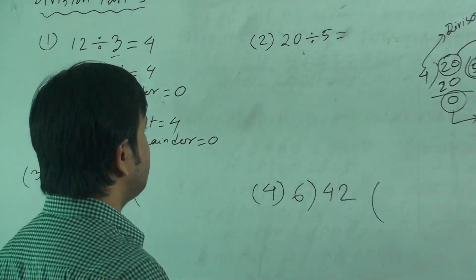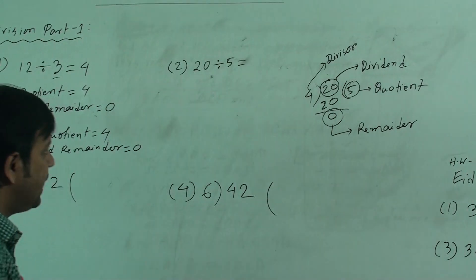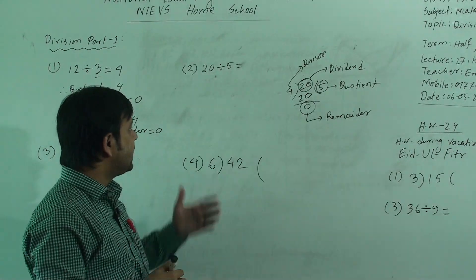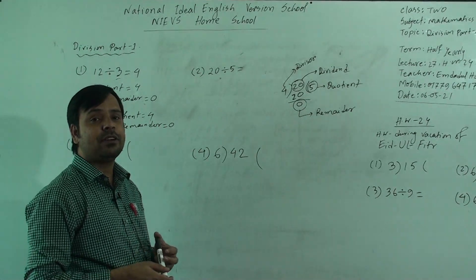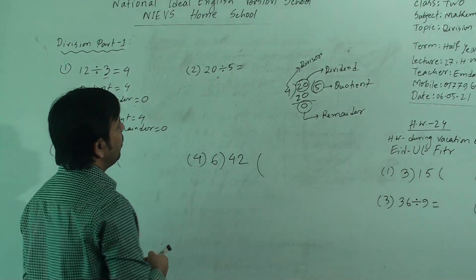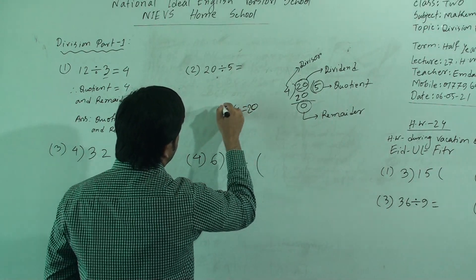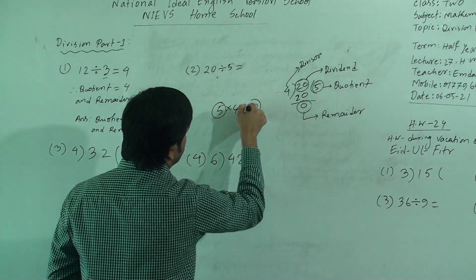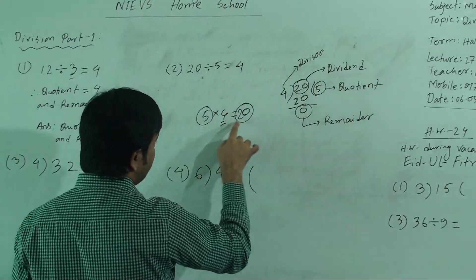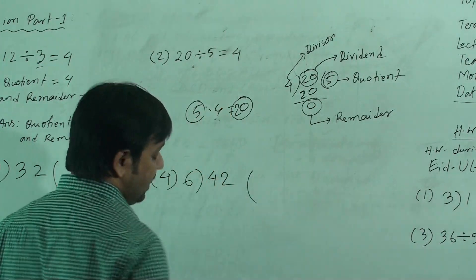Now let us see the next question. Next question is 20 divided by 5. We need to divide 20 by 5. So, 5 is the divisor. We have to say the times table of 5: 5 0s are 0, 5 1s are 5, 5 2s are 10, 5 3s are 15, 5 4s are 20. So, 5 4s are 20. Here divisor is 5, dividend is 20, and 4 is the quotient. We can write 4.